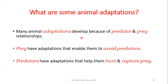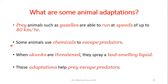Many animal adaptations develop because of predator and prey relationships. Prey have adaptations to enable them to avoid predators, while predators have adaptations that help them hunt and capture prey. For example, gazelles are able to run at speeds of up to 80 kilometers per hour. Some animals use chemicals to escape predators - when skunks are threatened, they spread a bad-smelling liquid.